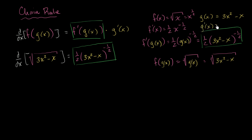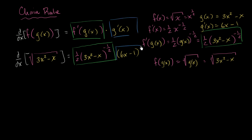g prime of x — using the power rule for each term — is equal to 6x minus 1. So this part right over here is just 6x minus 1, and we're multiplying. We've just applied the chain rule. To review: it's the derivative of the outer function with respect to the inner — 1/2 times g of x to the negative 1/2 — times the derivative of the inner function with respect to x, which is 6x minus 1.